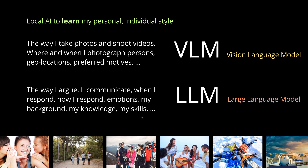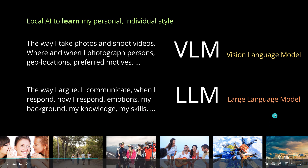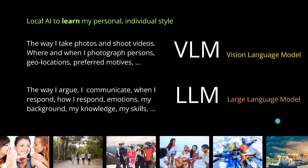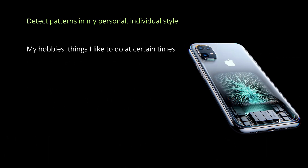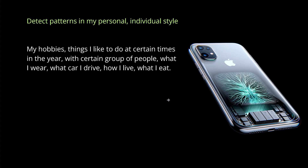Open your photo album and look at all the photos you have on your phone — imagine what you could extract from just the visual information. The main task is to detect patterns, detect my personal individual style. Find patterns in my private time, my hobbies, things I like to do at certain times of the year with certain groups of people — skiing, football — what I wear, how I live, what I eat, and the list goes on.